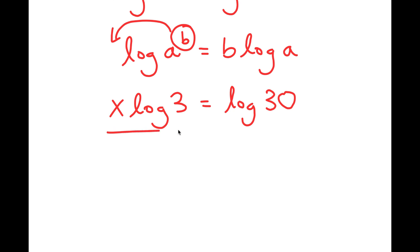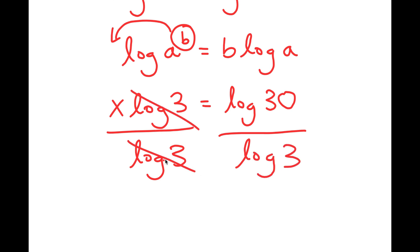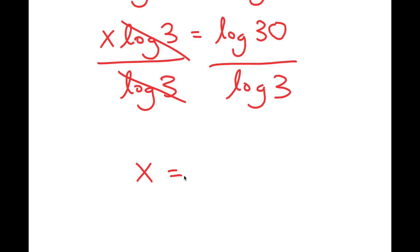Now from here I'm going to divide both sides by log 3. So these two cancel out, and I get x is equal to log 30 over log 3.